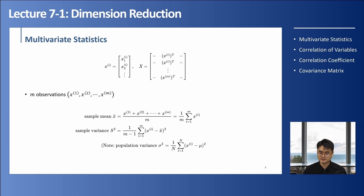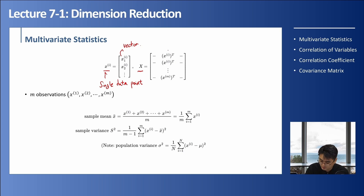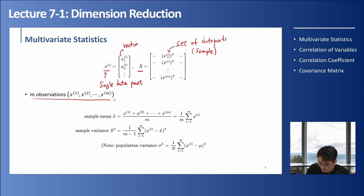Let's talk about multivariate statistics. Say we have a data point Xi — this is a single data point and it's a vector with multiple dimensions: dimension one, dimension two, and so on. If we stack all these data points, we form one data matrix X, where each row is a data point. This matrix X is the set of data points, which we call a sample. Let's say we have M observations, so we have M rows in our X matrix.